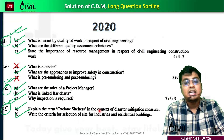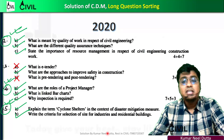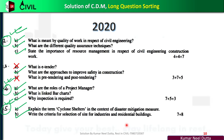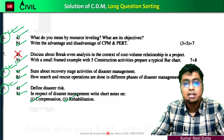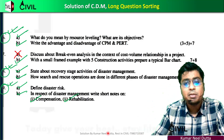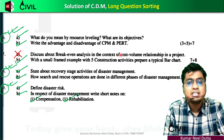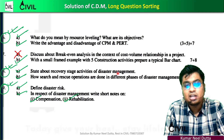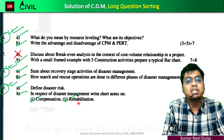Next is Cyclone Shelter — it is called Disaster Management. Write the criteria for site selection, industry and residential building — this is called Disaster Management. Next, we are going to talk about 2020, break-even analysis. We are going to talk about the recovery stage, disaster management, recovery stage, compensation and rehabilitation.